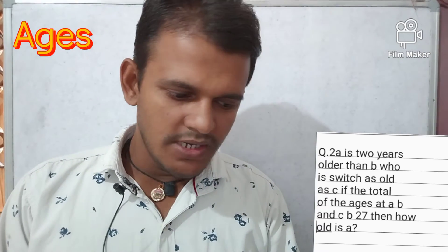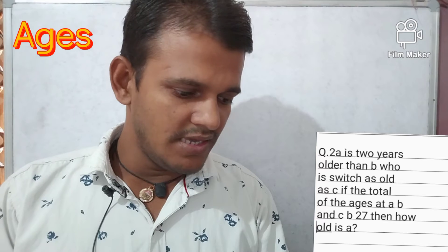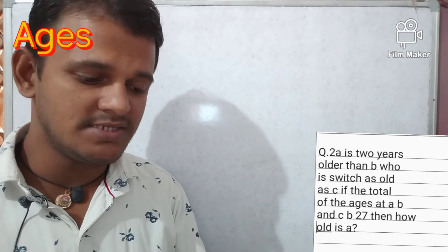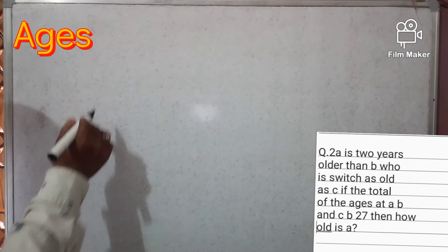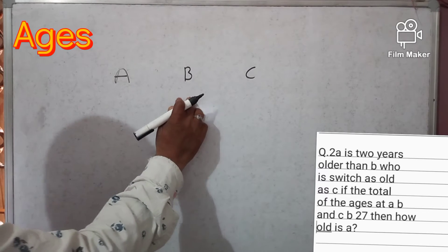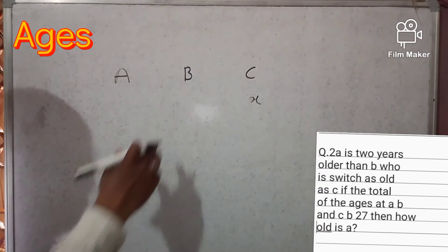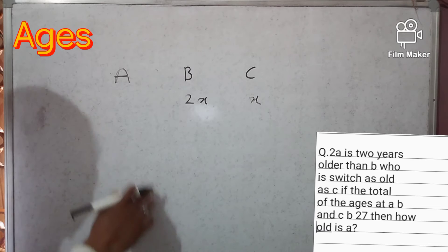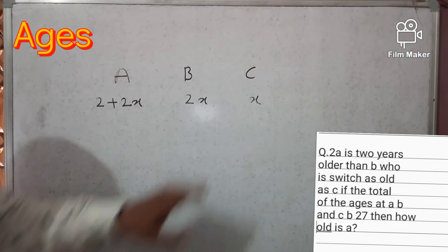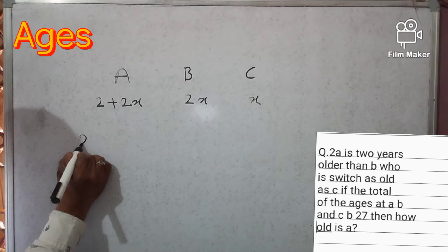Question number two: A is two years older than B, who is twice the age of C. If the total age of A, B, and C is 27, then how old is A? Our target is to find A's age. Let's take C equal to x. B is twice C, so B equals 2x. A is two years older than B, so A equals 2x plus 2.